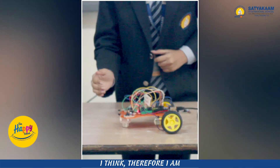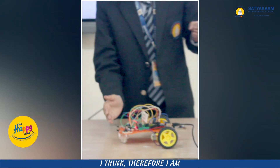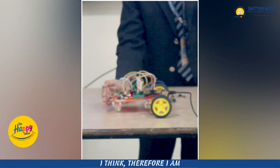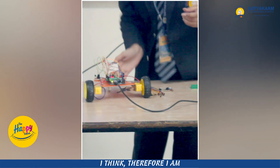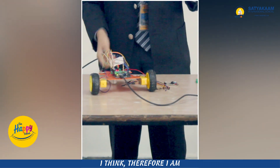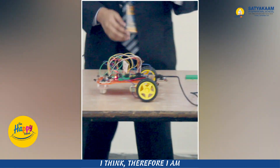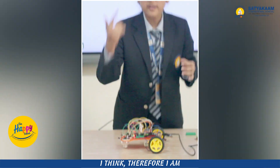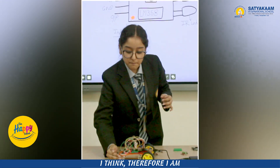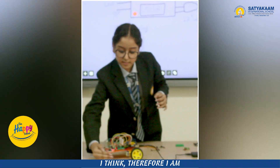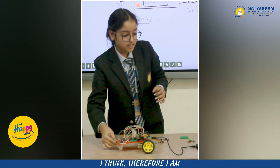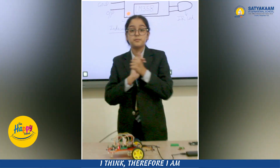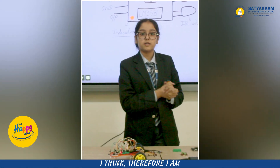Now placing a hand in front of the right IR sensor, we can see the robot is turning to the right side. Similarly, placing a hand in front of the left IR sensor, the robot will turn to the left. And just like that we have seen the practical working of our robot.